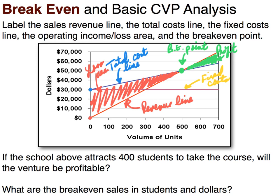Now we're going to use this graph to answer these questions just by eyeballing it. If the school attracts 400 students, will the venture be profitable? At 400, going up on the graph, it crosses the revenue line at about $40,000, and it crosses the cost line at about $46,000.